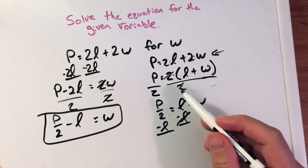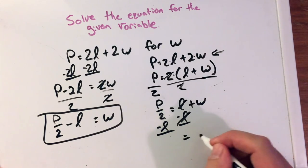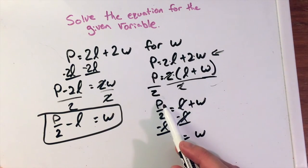The L's cancel. The positive L, negative L, they're gone. The W comes back down. And we're left with P over 2 minus L. That's my L.